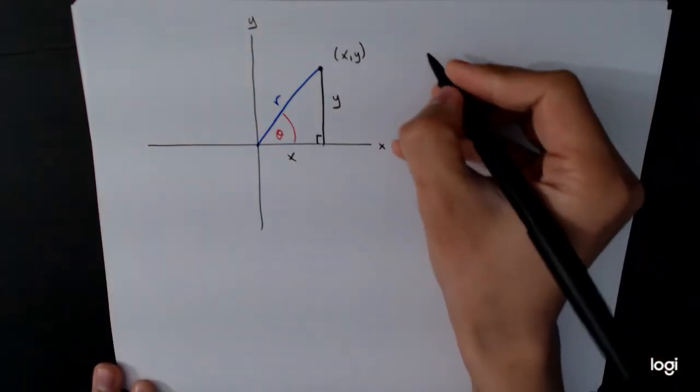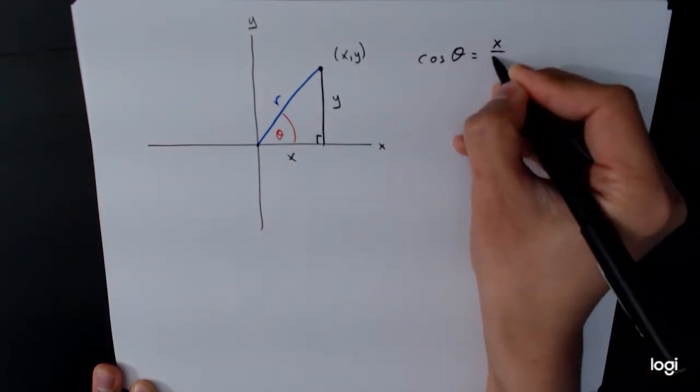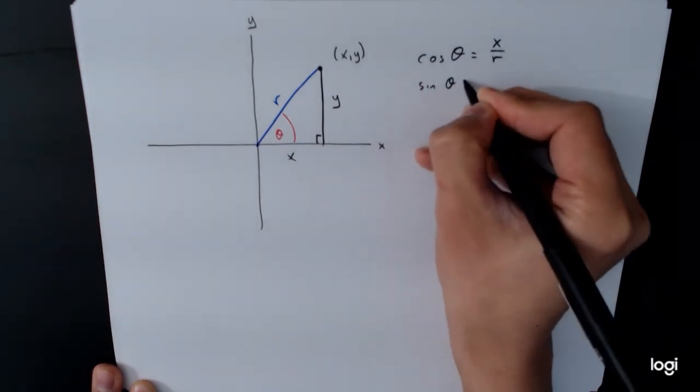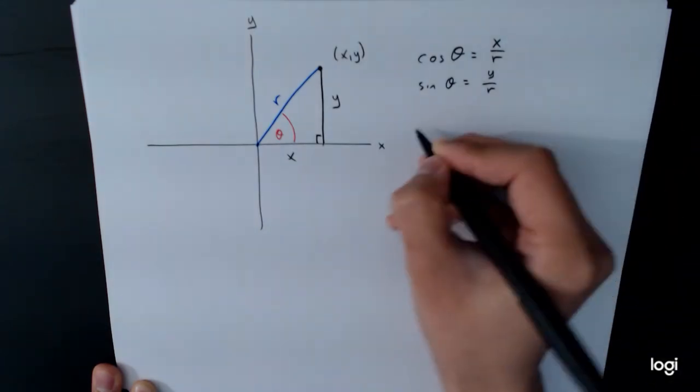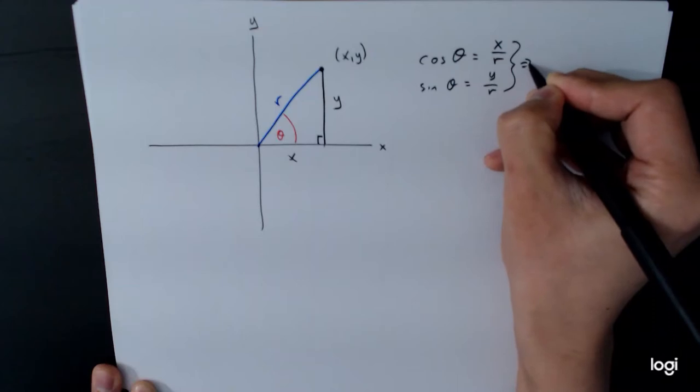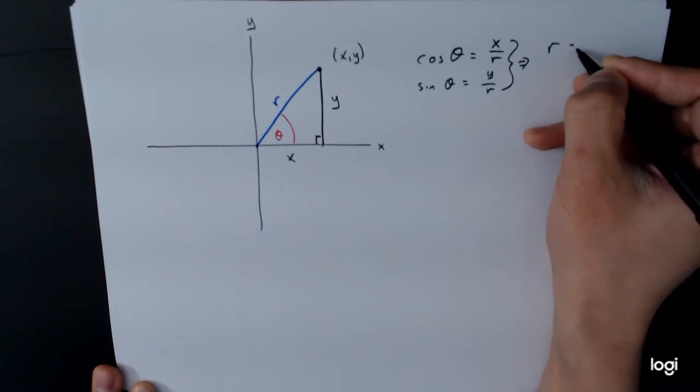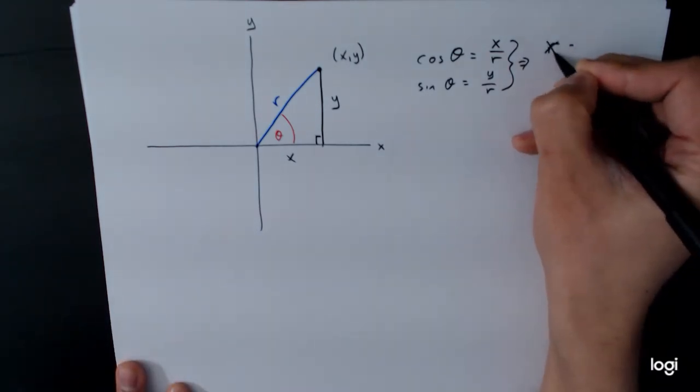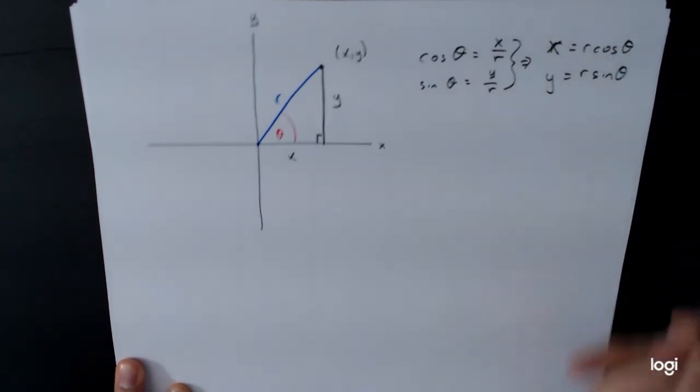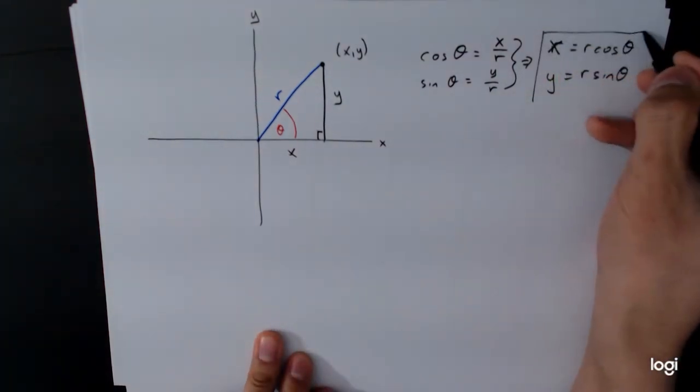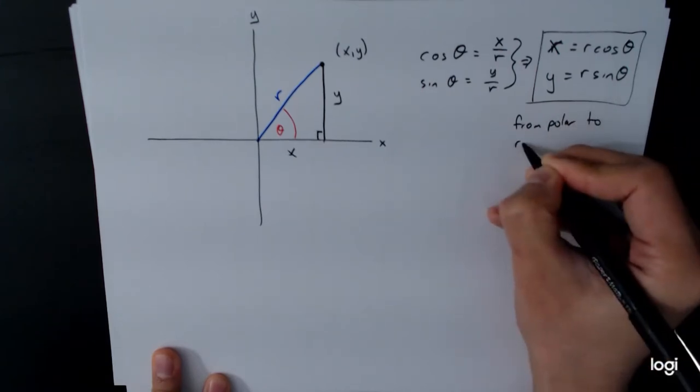So we have cosine theta, cosine is adjacent over hypotenuse, x over r, and sine theta, which is opposite over hypotenuse, y over r. And so if we rearrange these, we get x equals r cosine theta, and y equals r sine theta. And these two formulas give us the conversion from polar to rectangular.